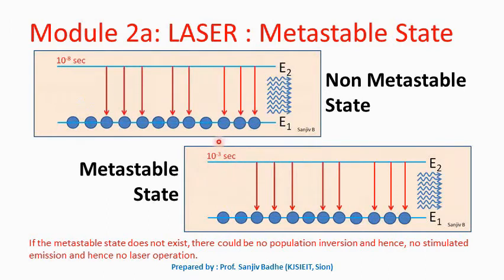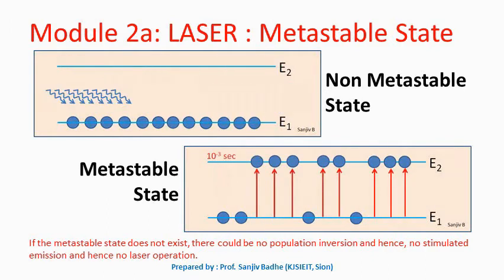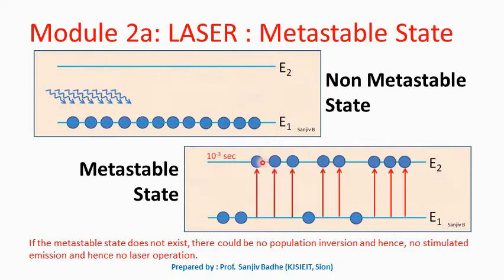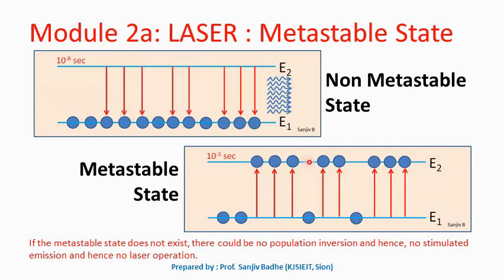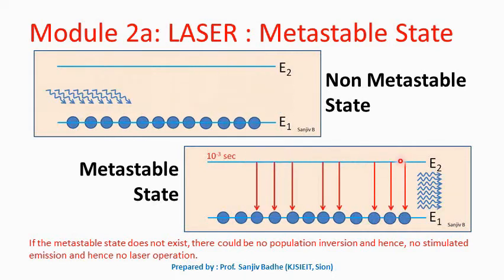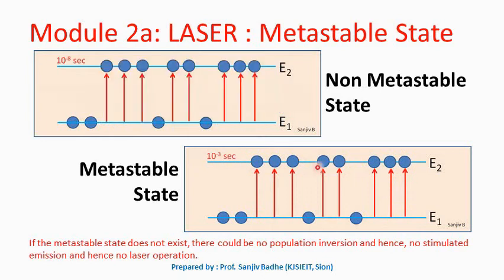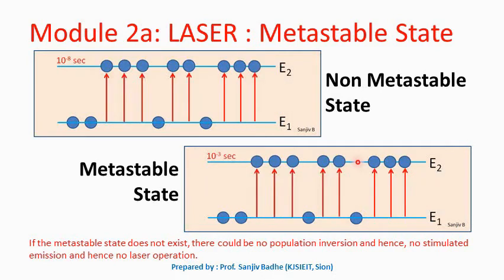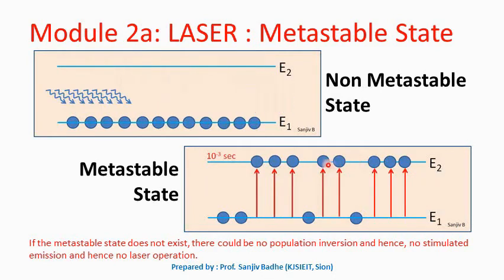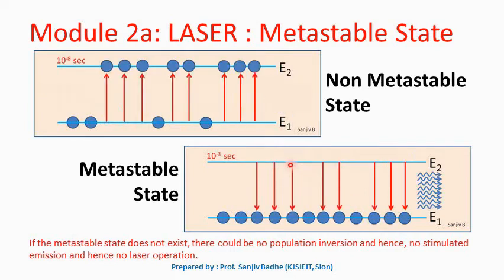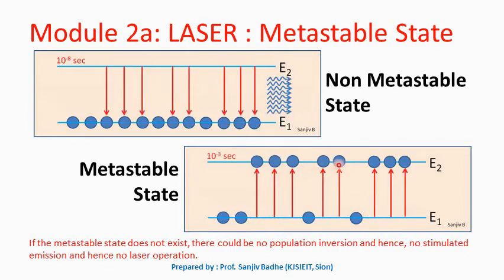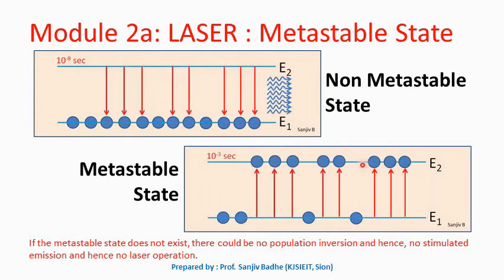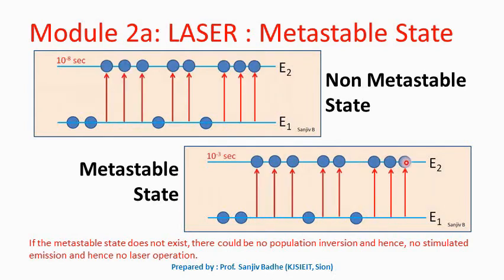If higher lifetime is available, then what will happen? If we take the atoms to the excited level, then they will remain in the excited level for some time — a few milliseconds. And this few millisecond time is enough to achieve the population inversion. And once the population inversion is achieved, we can initiate the light amplification, the lasing action.